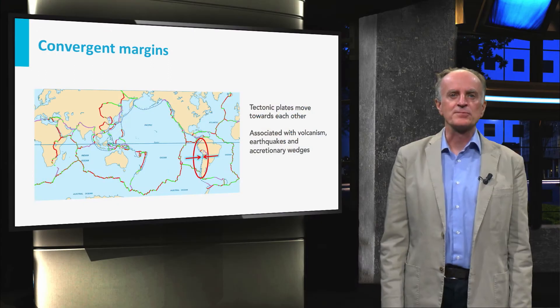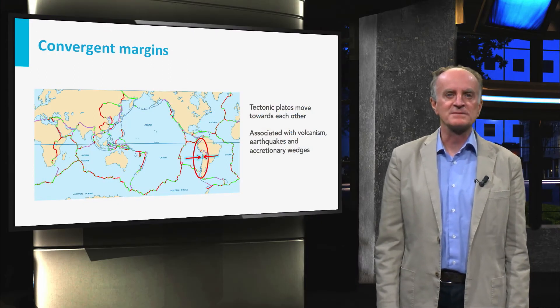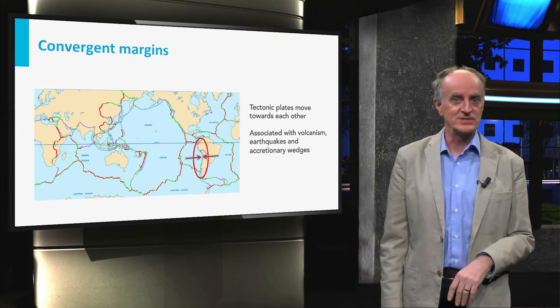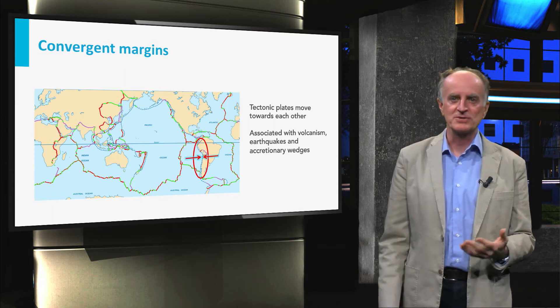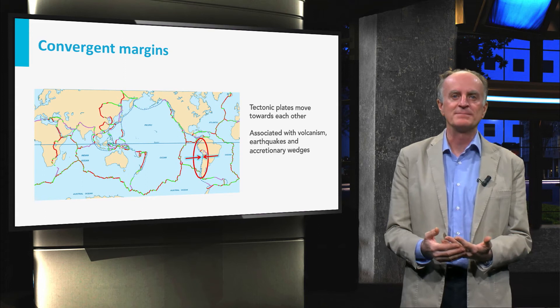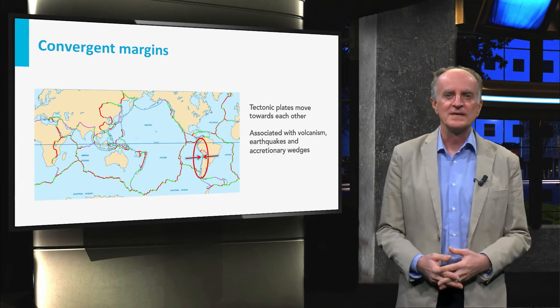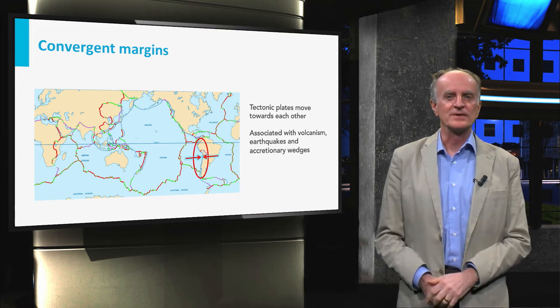Convergence can take place at rates larger than 10 cm per year and has been going on for millions of years. You can imagine that a lot of interaction must have taken place between these plates. It is not a surprise that convergent zones are also called active continental margins.